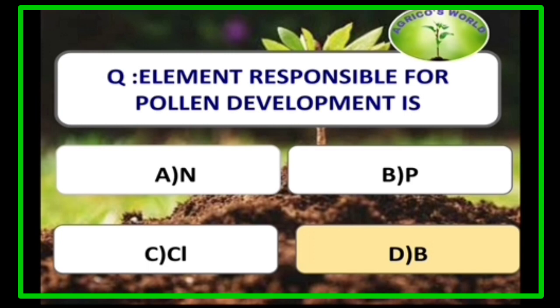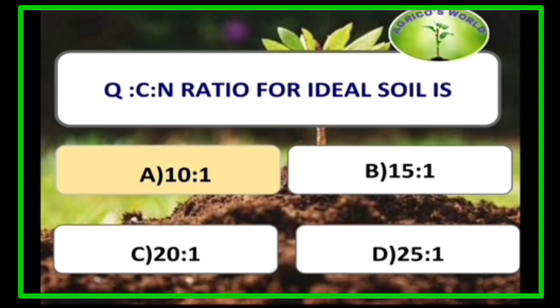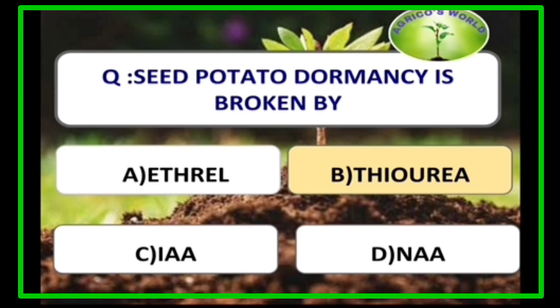Boron is the element responsible for pollen development, and it is also useful for carbohydrate translocation. The most suitable form of nitrogen for flooded paddy soil is ammonium. Potato crop also prefers the ammonical form of nitrogen. The C:N ratio for ideal soil is 10:1; in Indian soils, the C:N ratio is 10:1 to 12:1.